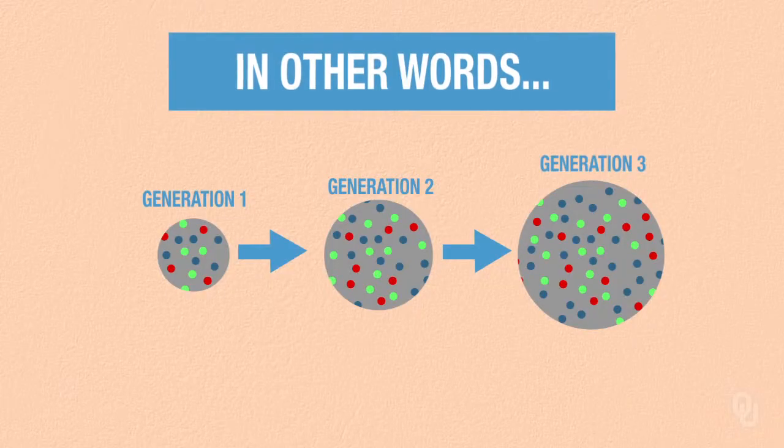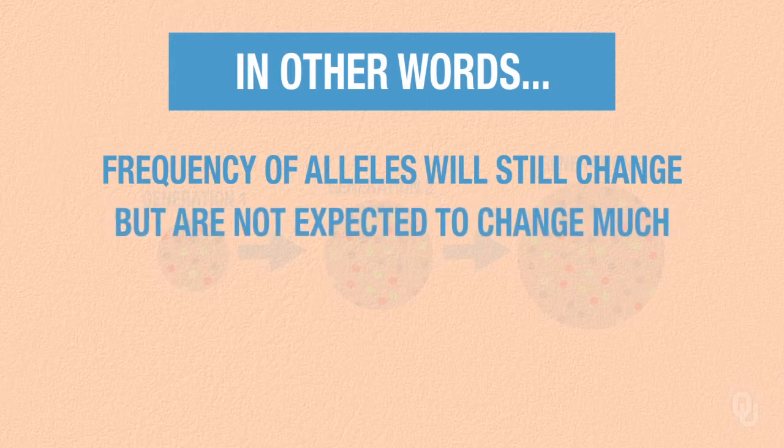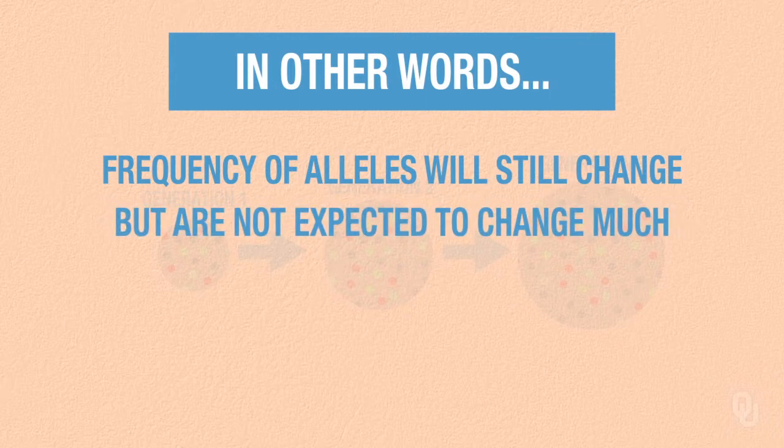In other words, while the frequencies of alleles will still change, they are not expected to change much because the sample is so good. As the population expands, genetic drift will have a minimized effect on allele frequency change — with respect to genetic drift, evolution would be slow.